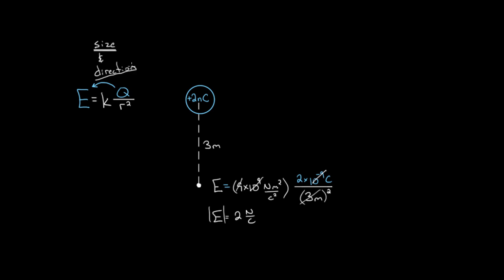How do we get the direction? We ask: what was creating this field? It was a positive charge. Positive charges always create fields that point radially away from them, and at this point three meters below, radially away points straight down. So we have an electric field from this two nanocoulomb charge that points straight down with a value of two newtons per coulomb. This means if we put another charge Q at that point, there would be two newtons of force for every coulomb of charge placed there.